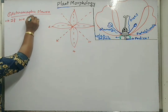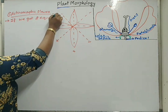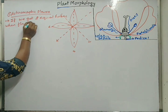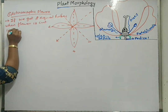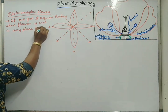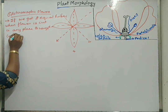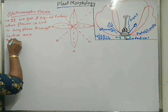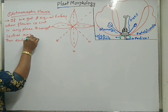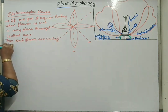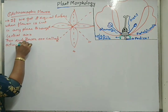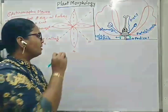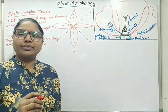If we get two equal halves when the flower is cut in any plane through the central axis, then such flowers are called actinomorphic flowers. This type of sectional cutting is equal to radial symmetry that we read in animals.